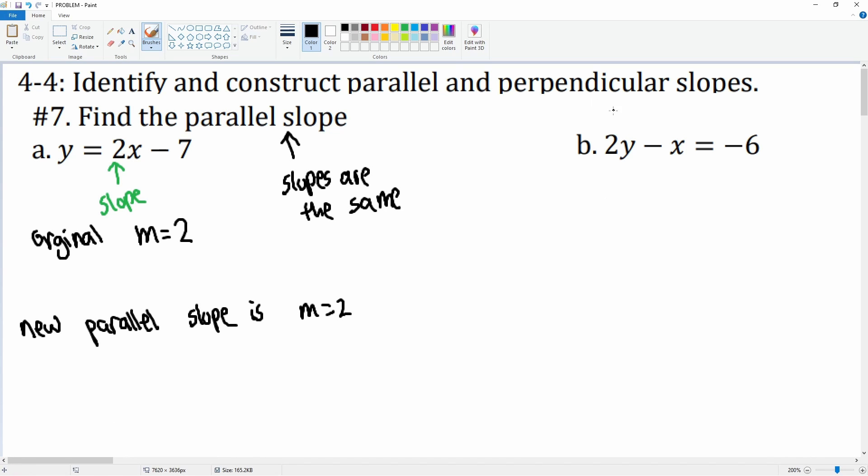Let's take a look at b. We can't use this because it's not in y equals mx plus b form, so let's convert it. We're going to add x to both sides. This cancels, leaving you with 2y equals x minus 6.